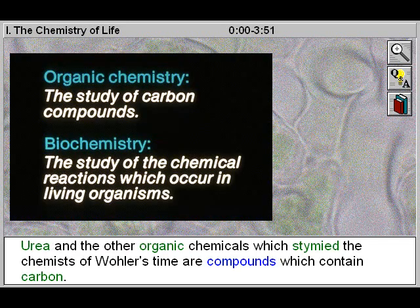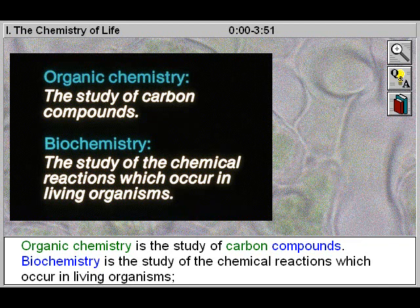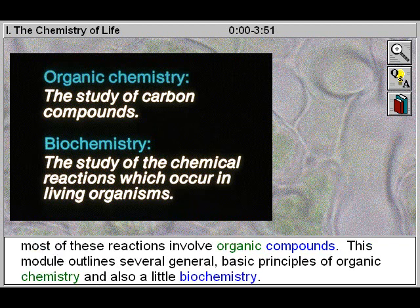Urea and the other organic chemicals which stymied the chemists of Wöhler's time are compounds which contain carbon. Organic chemistry is the study of carbon compounds. Biochemistry is the study of the chemical reactions which occur in living organisms. Most of these reactions involve organic compounds. This module outlines several general basic principles of organic chemistry and also a little biochemistry.